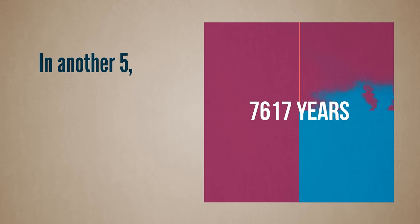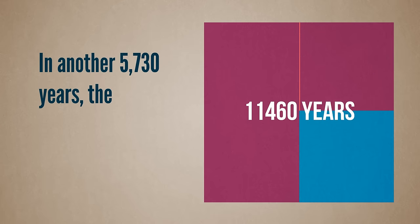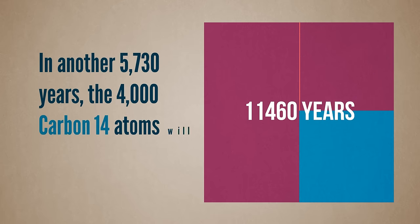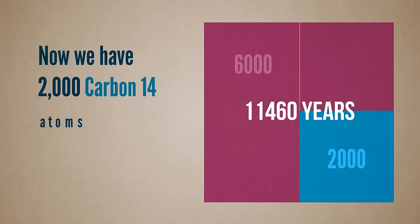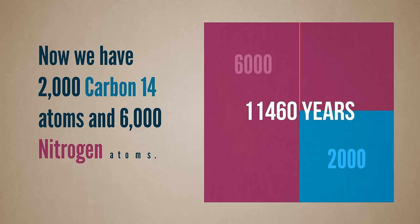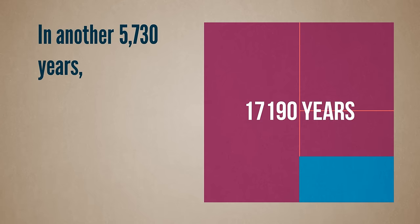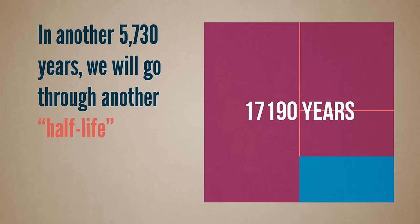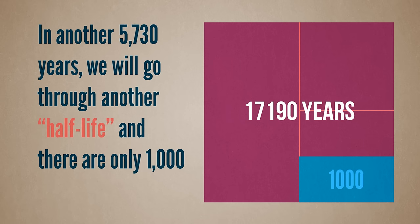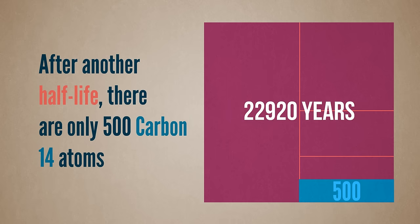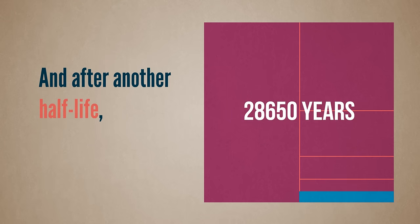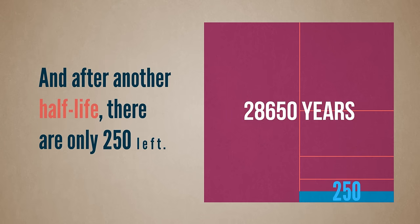In another 5,730 years, the 4,000 carbon 14 atoms will be halved again. Now we will have 2,000 carbon 14 atoms and 6,000 nitrogen atoms. In another 5,730 years, we will go through another half-life and there are only 1,000 carbon 14 atoms left. After another half-life, there are only 500 carbon 14 atoms left. And after another half-life, there are only 250 left.